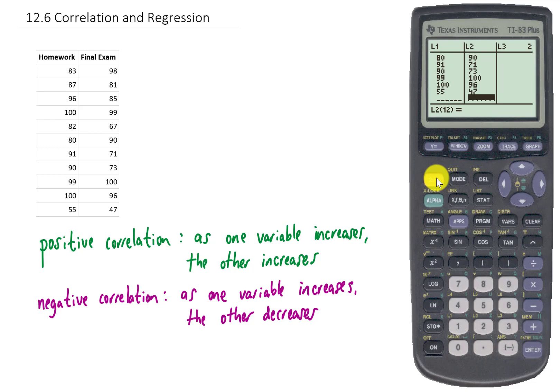What we can do is we can click Second and Stat Plot here. We want to turn one of our plots on. So I'm going to hit Enter and Enter again to turn the plot on. My X values are L1, my Y values are L2. I could just hit Graph at this point, but our window probably needs to be set up so that we can actually see all of these values.